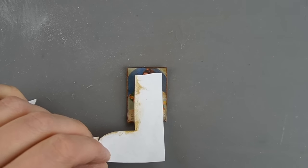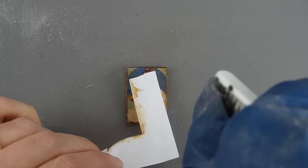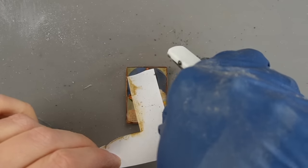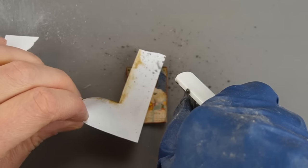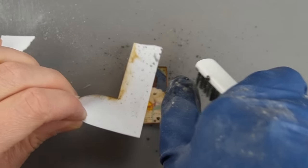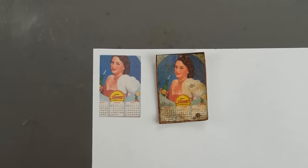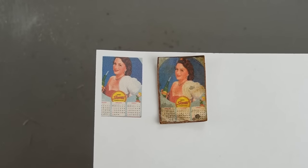To add the look of mold, I'm splattering paint from a toothbrush. I don't want the mold on her face, so I'm masking it off with a scrap piece of paper. When comparing it to this calendar I printed too close to the edge, you can really see the difference.